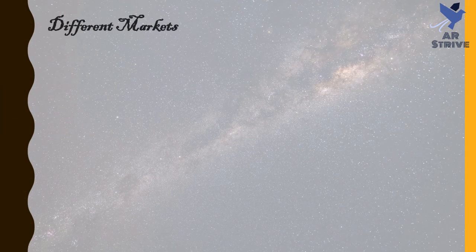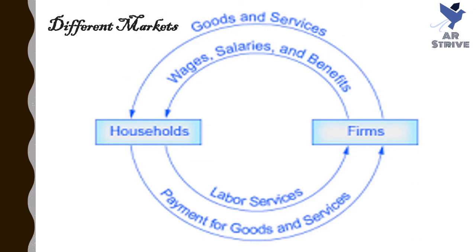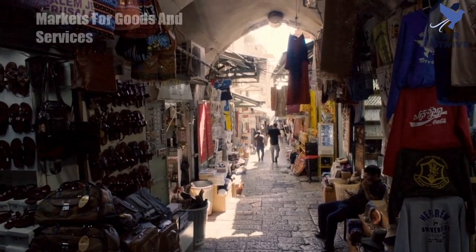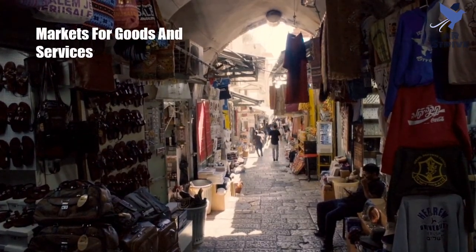Of course, in the real world there are many different markets for goods and services and markets for many different types of labor. The circular flow diagram simplifies this to make the picture easier to grasp. In the diagram, firms produce goods and services which they sell to households in return for revenues. This is shown in the outer circle and represents the two sides of the product market — the market for goods and services in which households demand and firms supply.